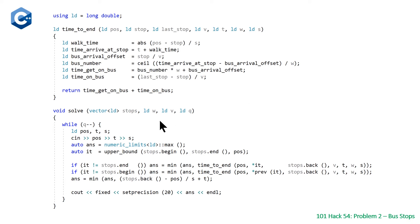We'll start with solve. This takes four parameters: a vector of long doubles—we're using a type alias ld to mean long double—we'll call that stops, and then three long doubles: w is the waiting time, v is the speed of the bus, and q is the number of queries or individuals that we need to output the time to end for.